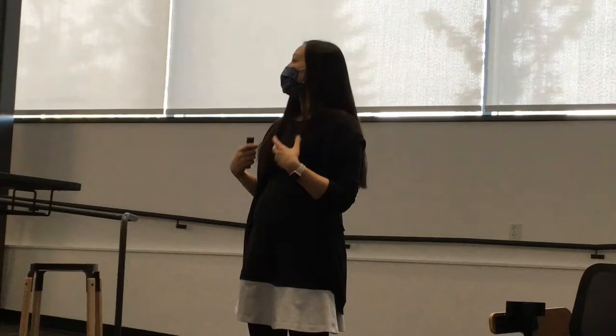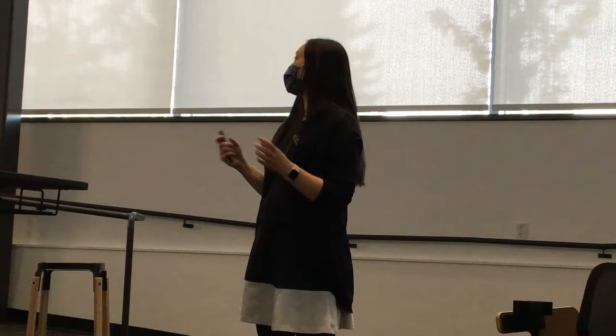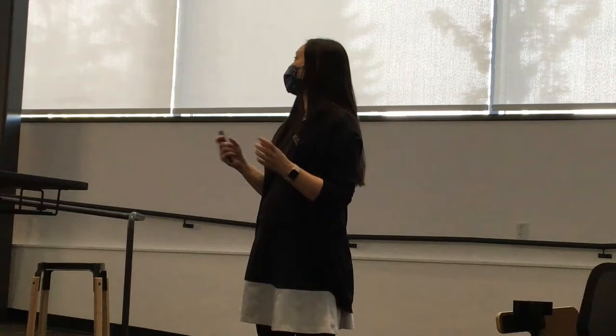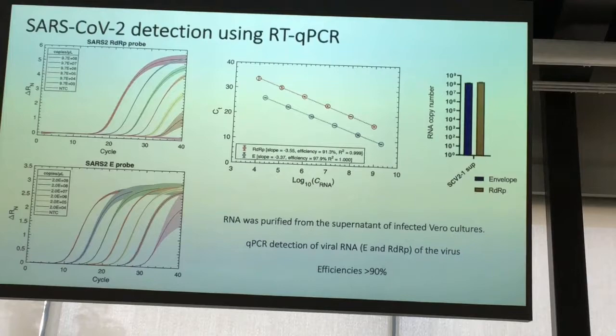My lab has been doing it and has come up with our own primers for different regions of the virus. We amplified for the RDRP gene and also the E gene. We did this on virus from the BSL-3 lab and found titers quite high — about 10 to the 8 — meaning we're growing virus well and can detect it through this qPCR assay.